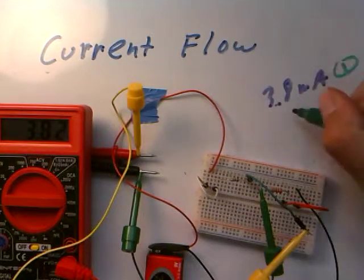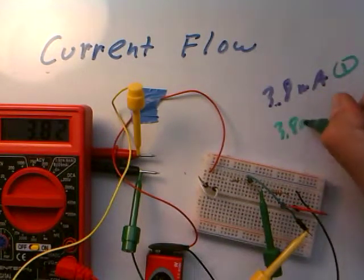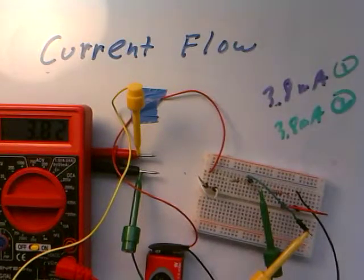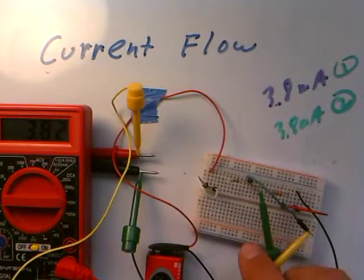So this first resistor, 3.8 milliamps coming out of the second resistor. And let me just continue now.